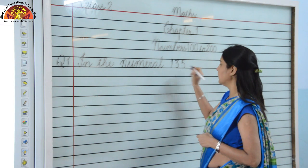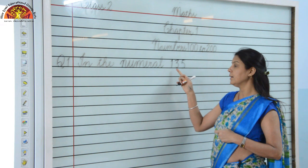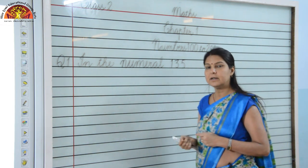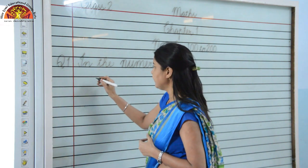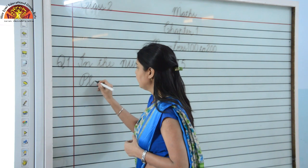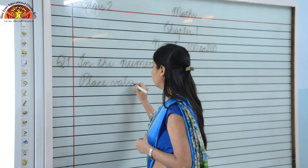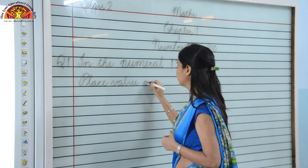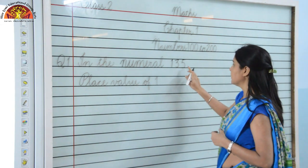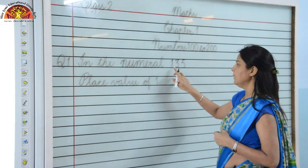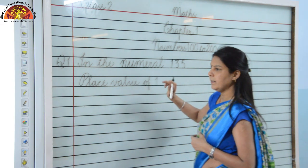In number 135, first of all, we will see how many digits it has. It has 3 digits. So, as you know, children, a 3-digit number will always be found in hundreds. So first we will write the place value. We will start counting place value from the right-hand side: this is 1's, 10's and 100's. So what is the place value of 1? The place value of 1 is 100.